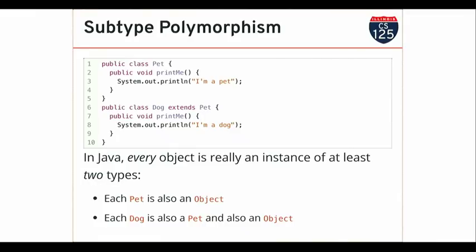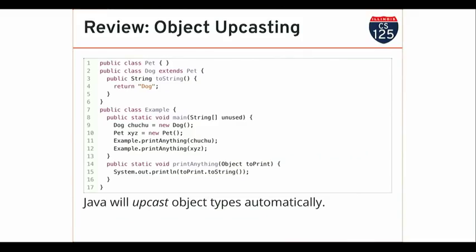Now there are consequences when we start to look at a dog as a pet or as an object. If I look at a dog as an object, I don't get the printMe method that's defined on the pet class. Instead, I can only use the methods that are defined by Object.